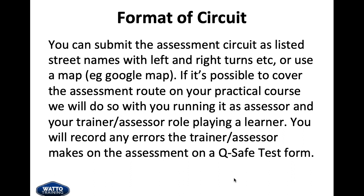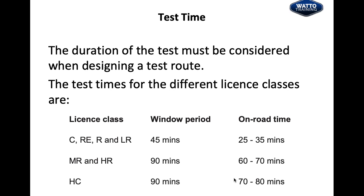Test time: the duration of the test must be considered when designing your test route. For a C-class trainer, the window period is 45 minutes but the actual on-road time is 25 to 35 minutes. For a heavy rigid instructor, the window is 90 minutes and the on-road test runs 60 to 70 minutes. For HC, the window period is 90 minutes with on-road time of 70 to 80 minutes — keeping in mind that with a semi-trailer you need to uncouple and recouple the trailer, which takes some time.